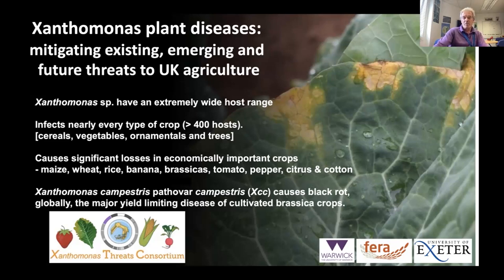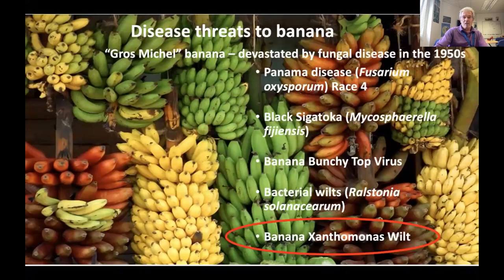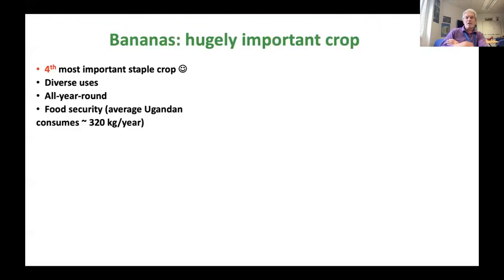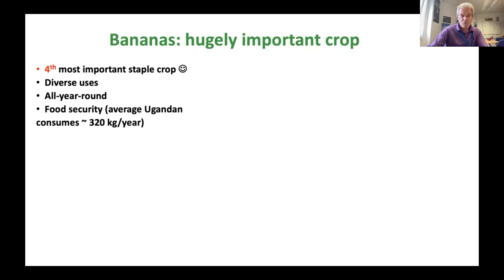This is a multidisciplinary project with Exeter, Fera, and Warwick involved. I want to give you an example of bananas — there are a number of diseases of bananas, and there's one incredibly important disease which affects banana production in Africa. Why should we care about this? Banana is the fourth most important staple crop in the world, and like potatoes, China and India are the biggest producers.